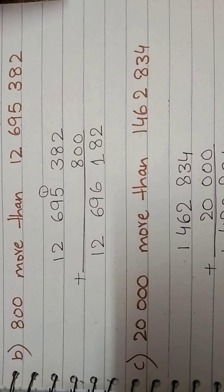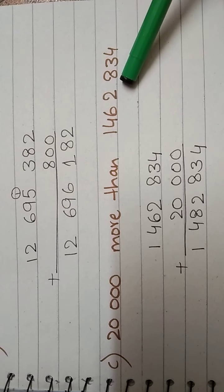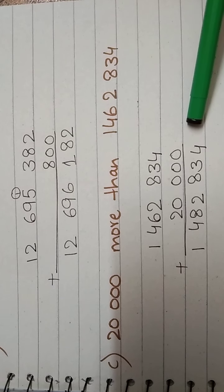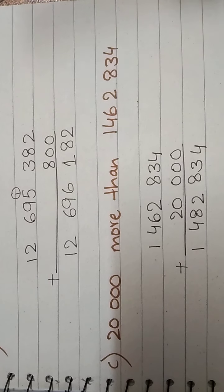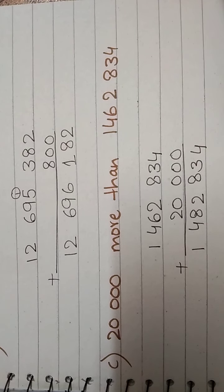We have added 800. Now in part C, it's exactly the same. Here is 20,000 more than this number. We have added 20,000 in this way.